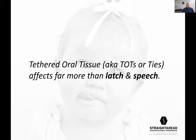When we talk about ties, what are we looking at? Tethered oral tissues — we call them TOTs, we call them ties. Most people know they affect latch and speech, but they affect far more. I would go as far as to say that latch and speech are at the bottom of the barrel of the things that TOTs can influence and affect, specifically in neurodevelopment and how our kids grow and thrive.